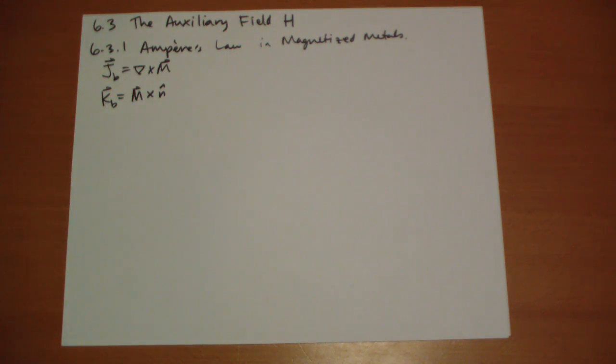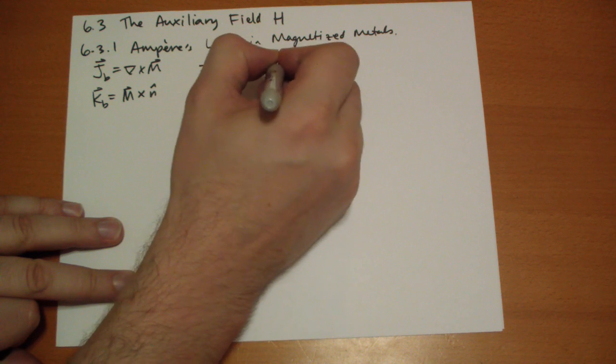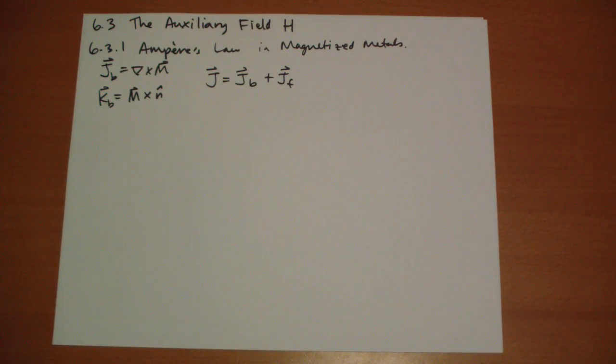Otherwise, if it is a conductor, the current can just flow through the material itself. In any event, the total current is equal to the bound current plus the free current. The free current is the stuff that we tend to have control over.